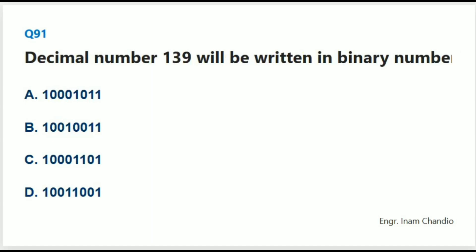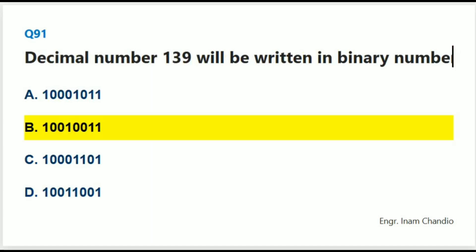Decimal number 139 written in binary numbers is: The correct answer is B. 10001011.